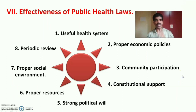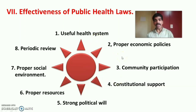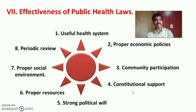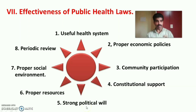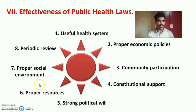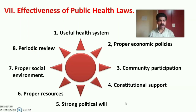Next is the effectiveness of public health laws. To make public health laws effective and result-oriented, we need support from the following factors: a useful health system, proper economic policies, community participation, constitutional support or effective system for implementation, strong political will and support, proper resources — man, money, material — to plan and implement public health laws, a proper social environment to enact public health laws, and periodic review of public health laws. These are the eight important supportive factors for the effectiveness of public health laws.